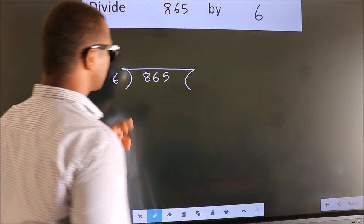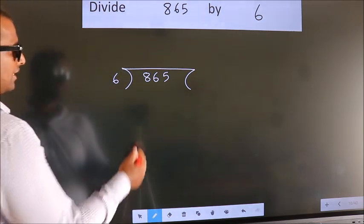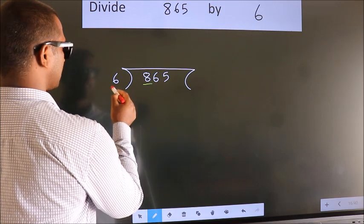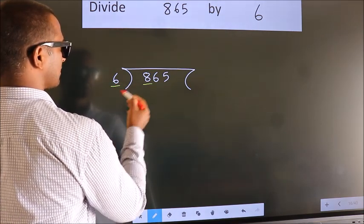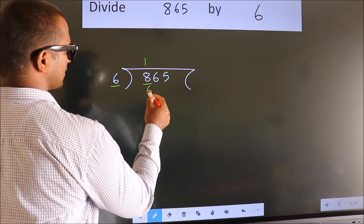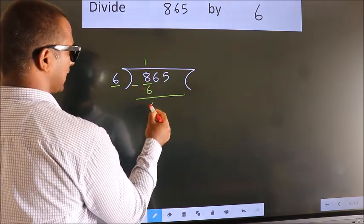This is your step 1. Next, here we have 8, here 6. A number close to 8 in 6 table is 6 once 6. Now, we should subtract. We get 2.